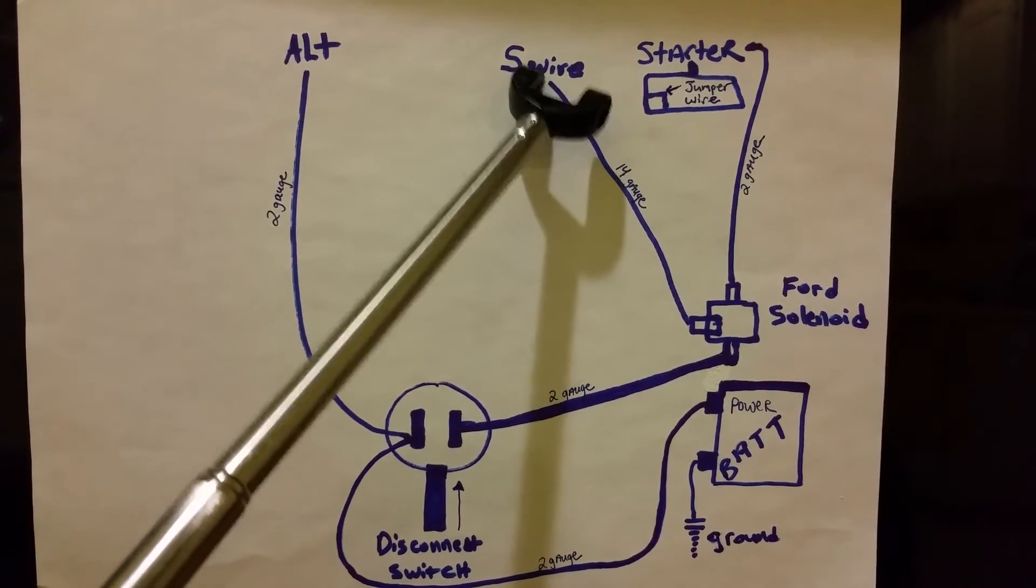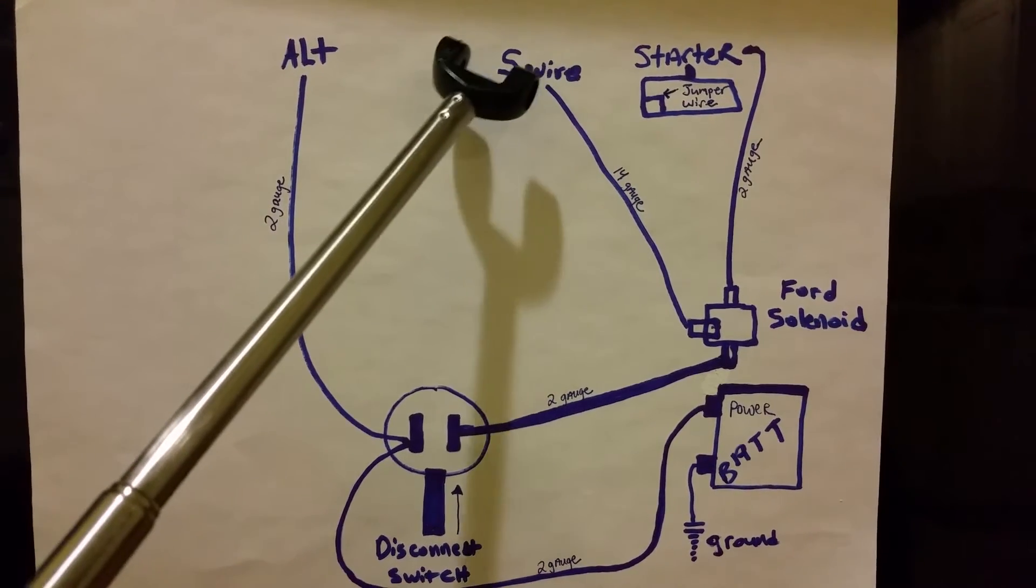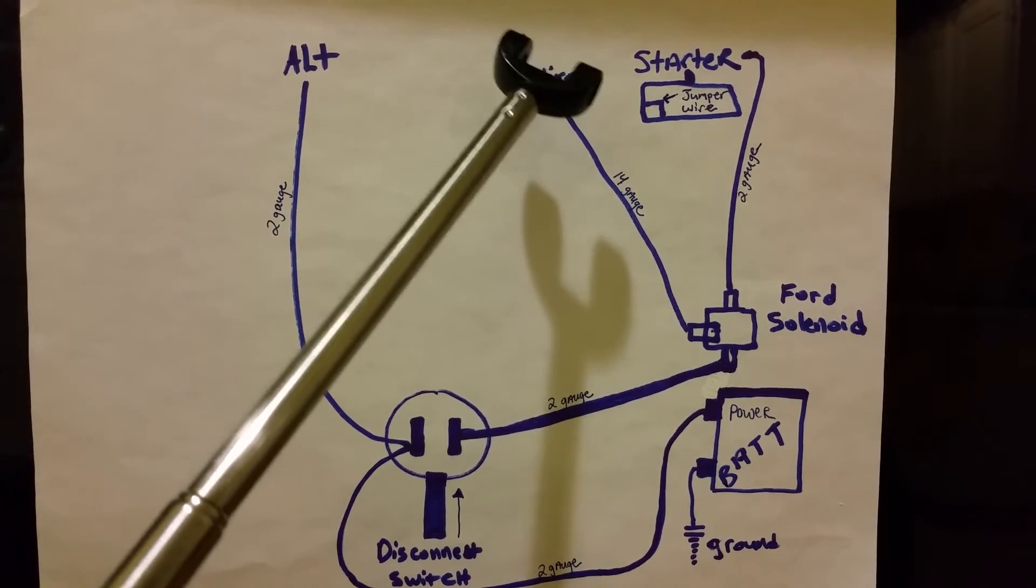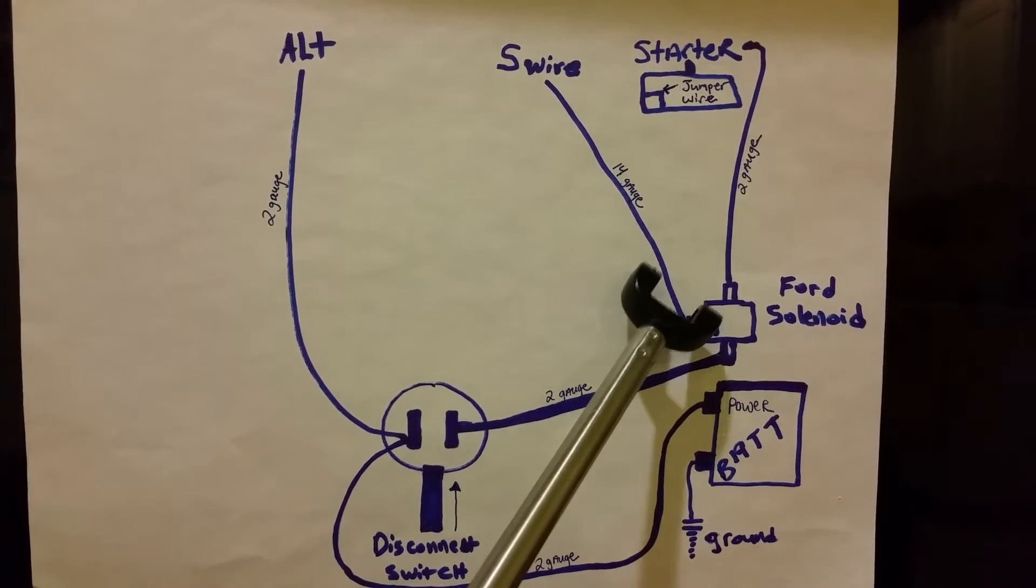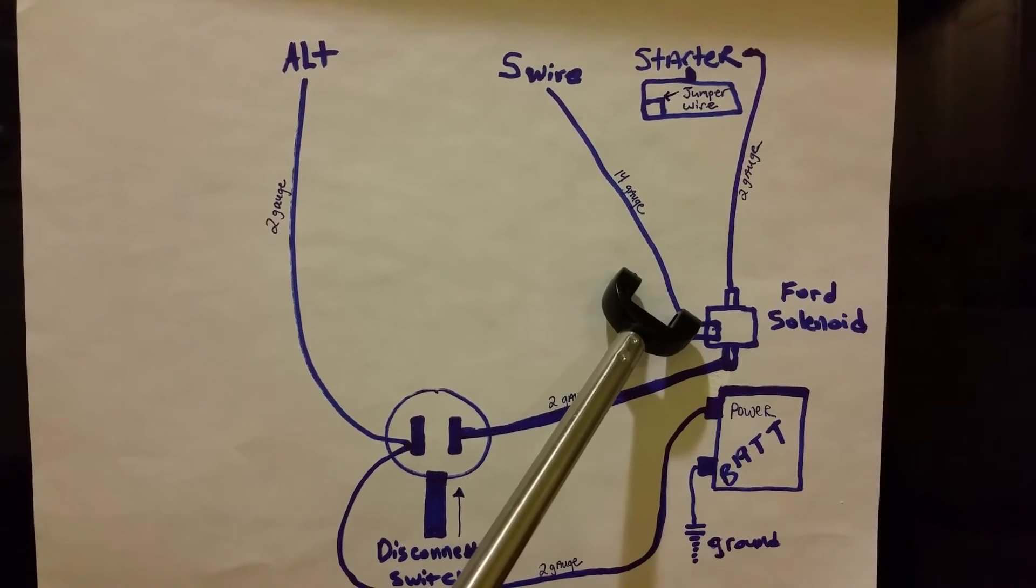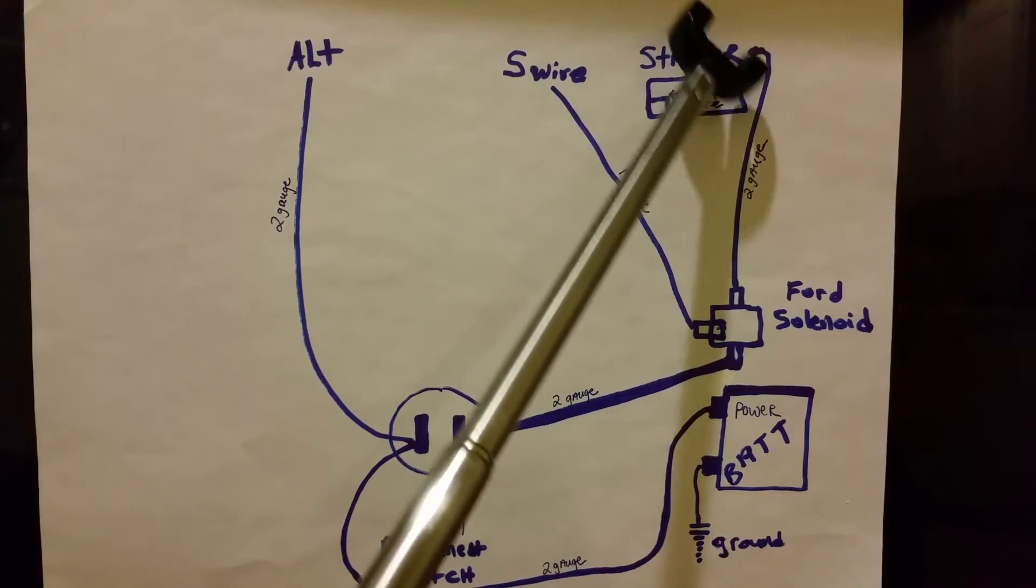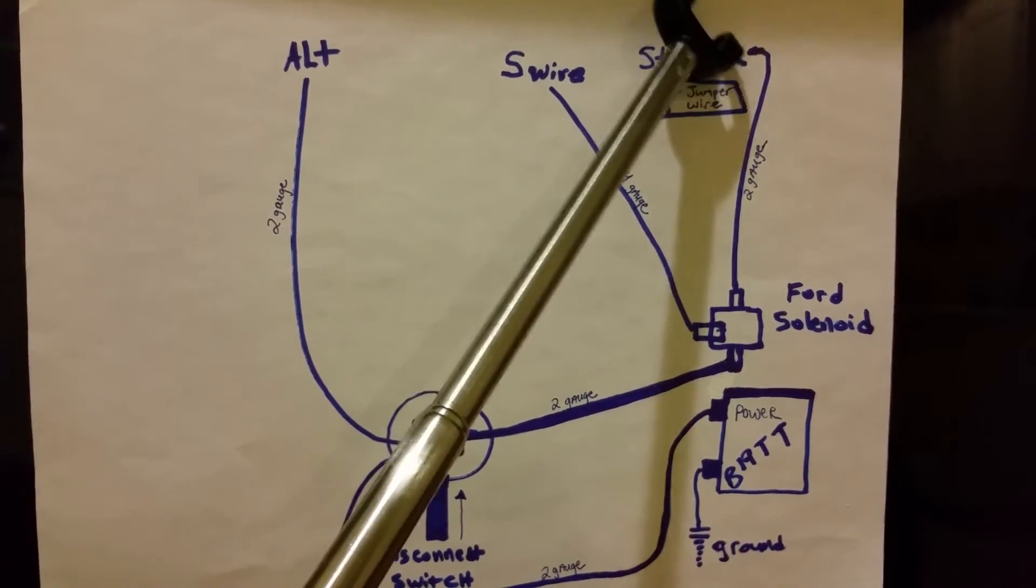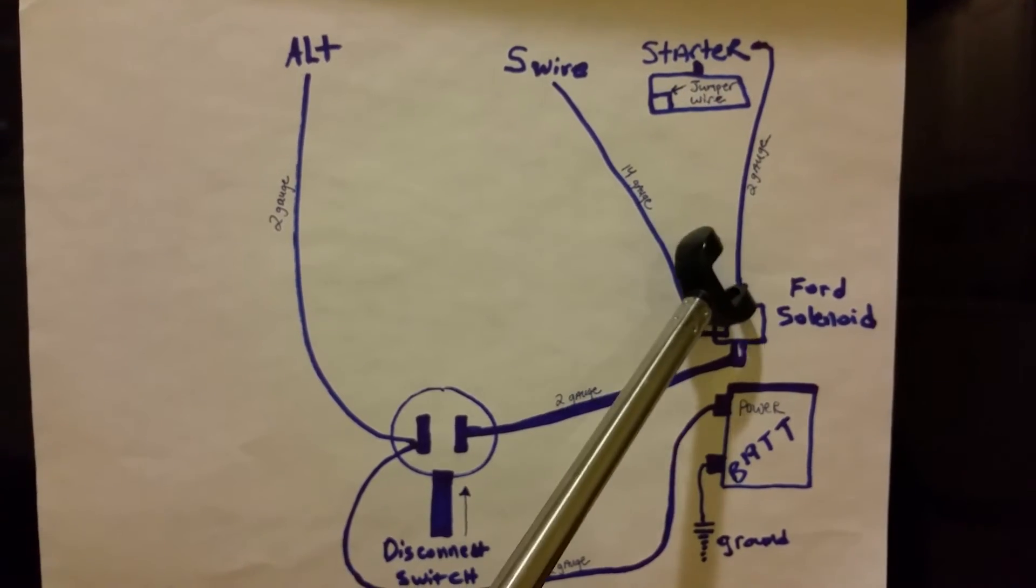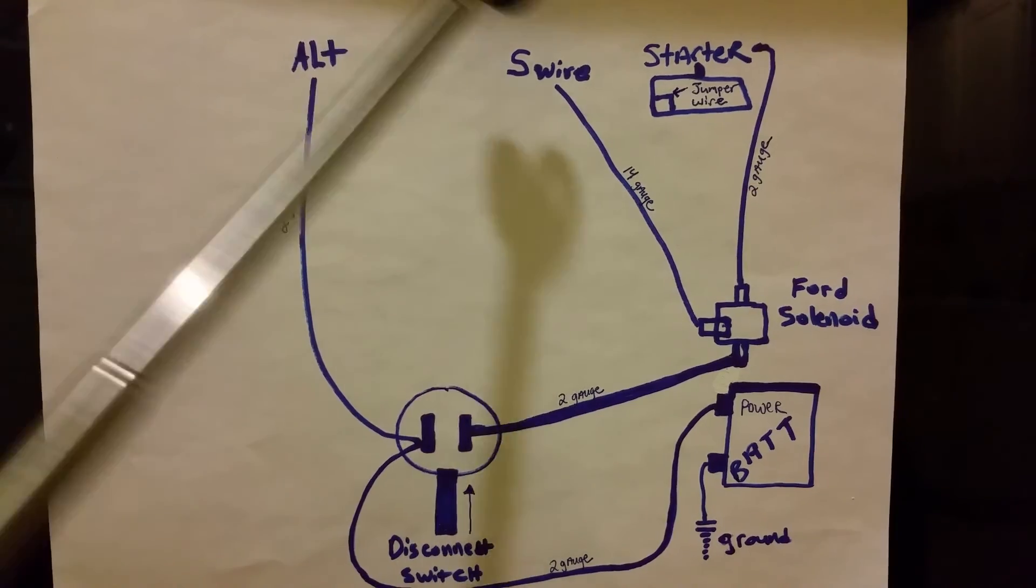There's an S wire on your starter. You're going to have to take that S wire off the starter and extend it to the middle post of the Ford solenoid. Then you can take your two gauge, or zero gauge, or one gauge wire from your starter all the way to this side of the Ford solenoid.